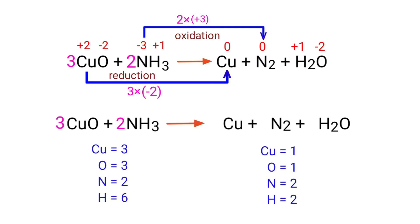In this equation, we need to balance the copper atoms first. To do this, we need to put a coefficient of 3 in front of Cu.